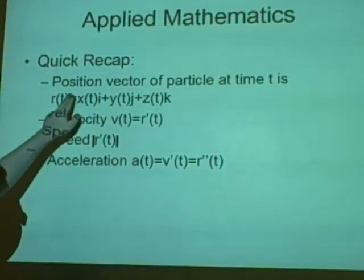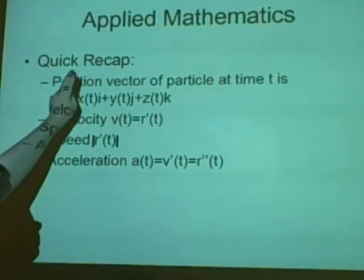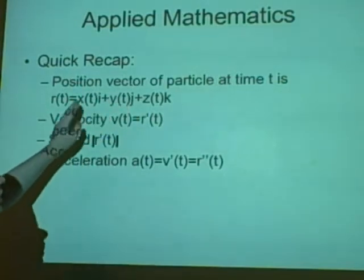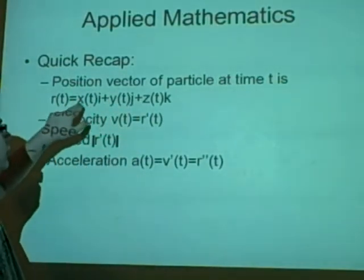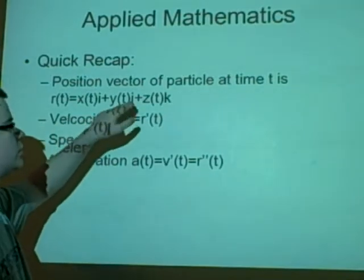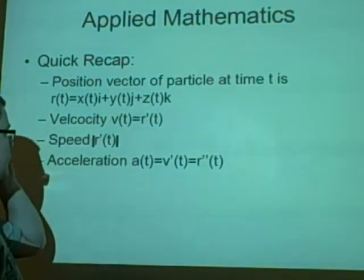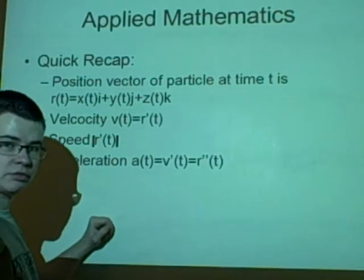We'll just run through a quick look at this. We have a position vector of a particle at time t is r equals xi plus yj plus zk. And to get the velocity we differentiate it.